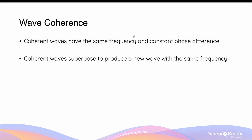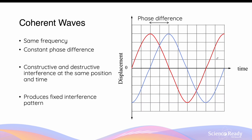A concept in wave physics that you need to be aware of is the idea of wave coherence. Coherent waves refer to ones that have the same frequency. Therefore, if they have a phase difference between them — whether this is half a wavelength or the entire wavelength — it will remain constant throughout the propagation. Wave coherence is important to understand when studying wave superposition because coherent waves, with the same frequency, will superpose or interfere with one another to produce a new resultant wave of the same frequency.